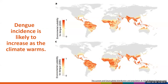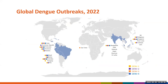During 2022, multiple countries reported dengue outbreaks. The colors by each country on the map represent the dengue viruses or serotypes circulating in those areas. As you can see, many endemic areas report circulation of multiple dengue virus types.